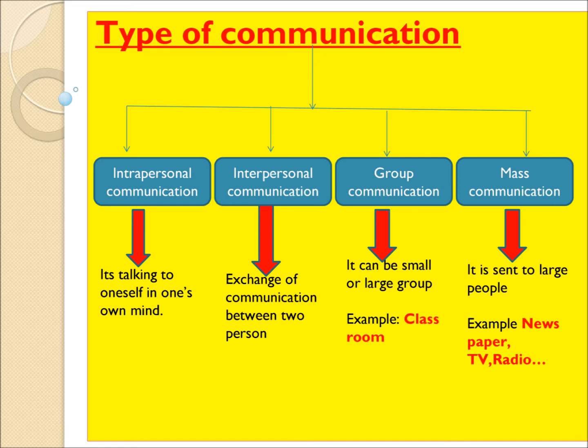Interpersonal communication: if you want this communication, at least two people are needed. Interpersonal communication is the exchange of communication between two people. Third, group communication: a small group or large group is needed. Example: classroom discussion is group communication.